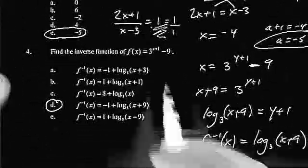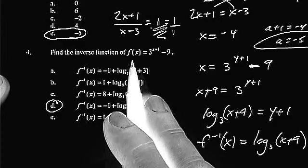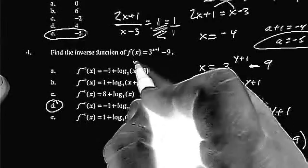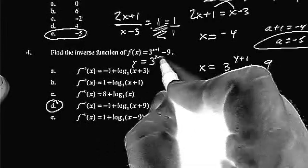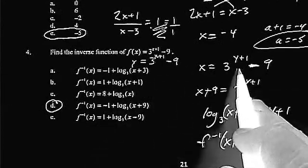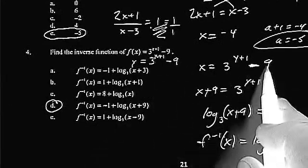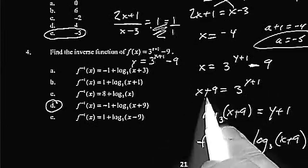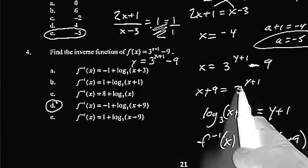Find the inverse of, well, remember, to find an inverse, right, this is y equals 3 to the x plus 1 minus 9. We have to switch x and y. And then we start solving for y. So obviously, we're going to add 9 to the other side. So we have x plus 9 equals 3 to the y plus 1.